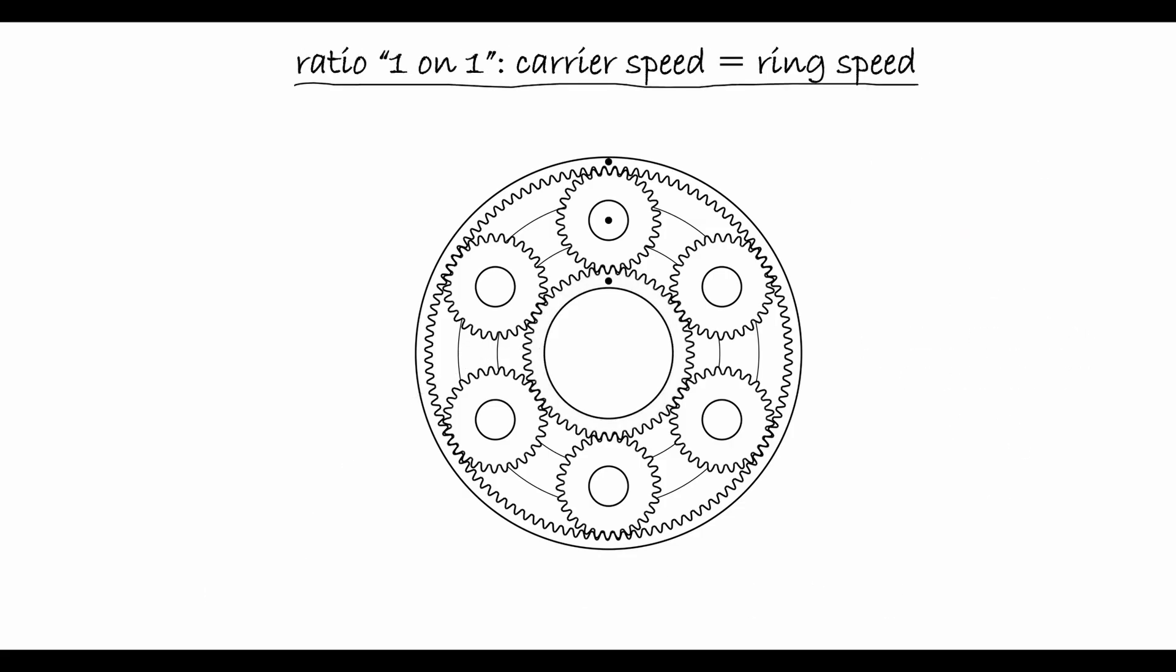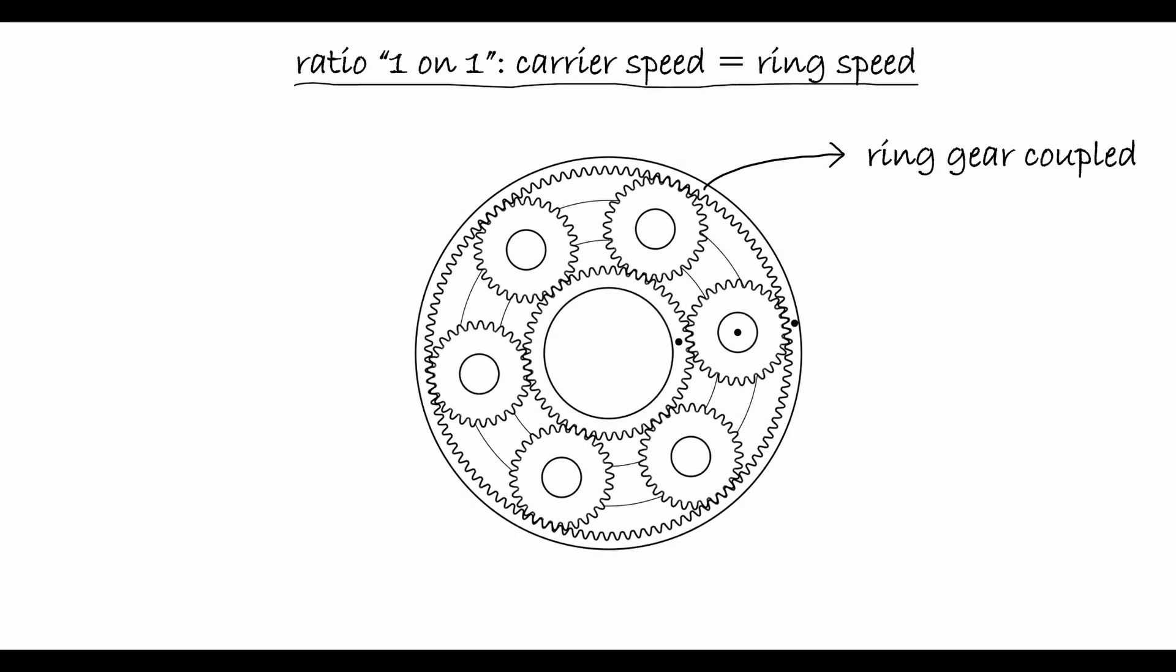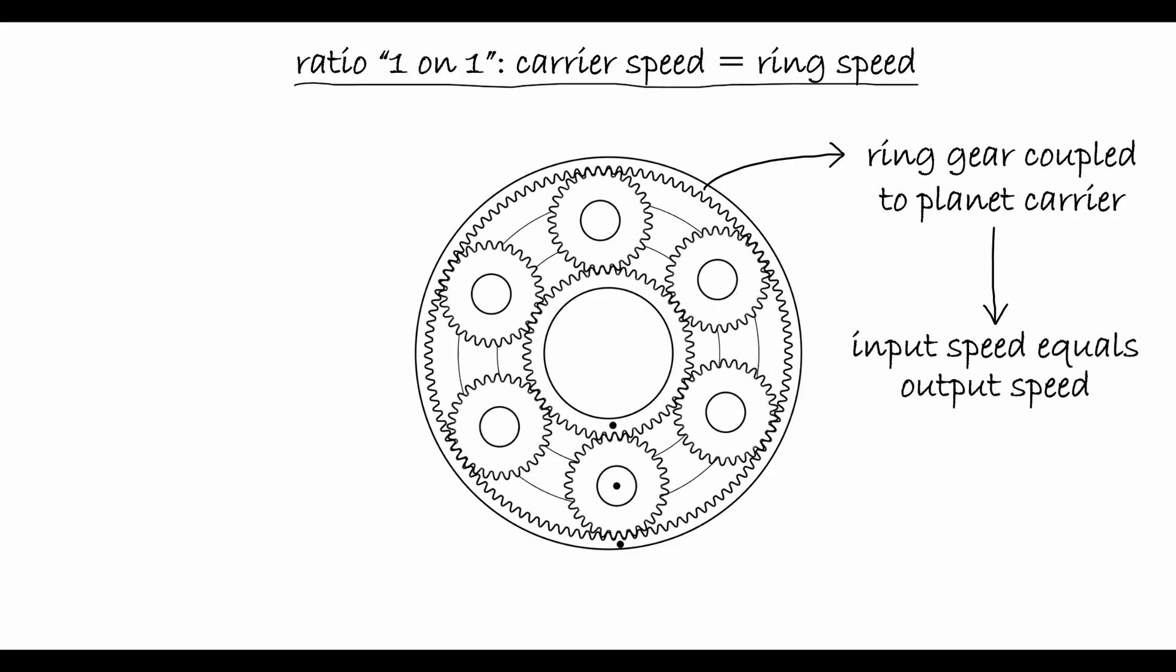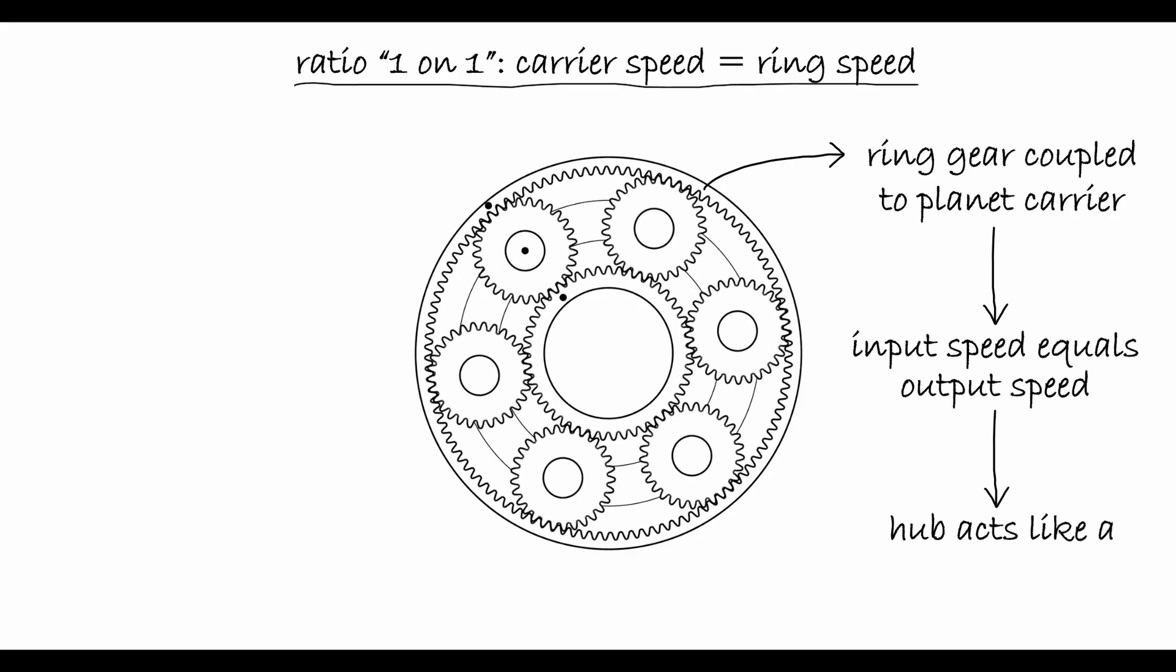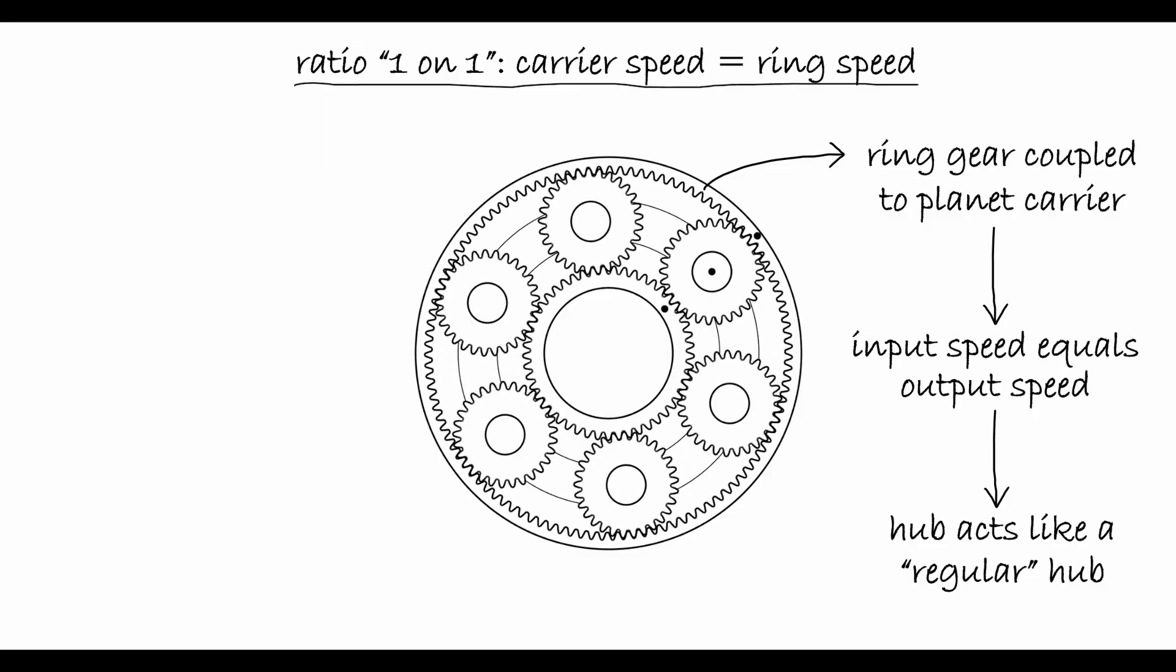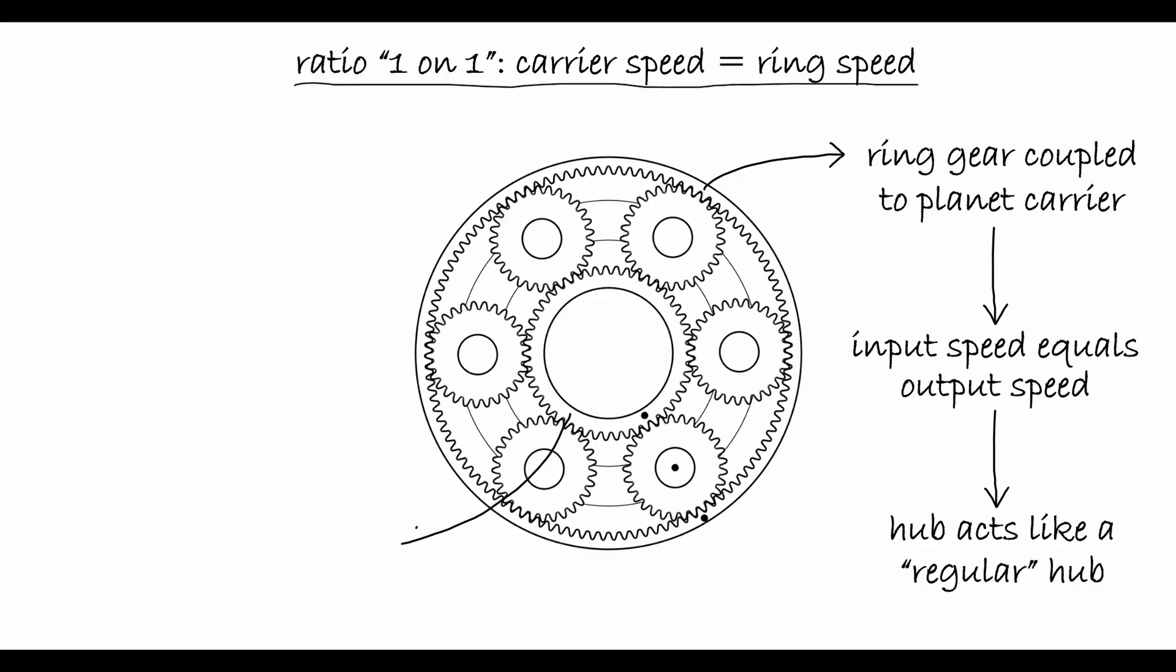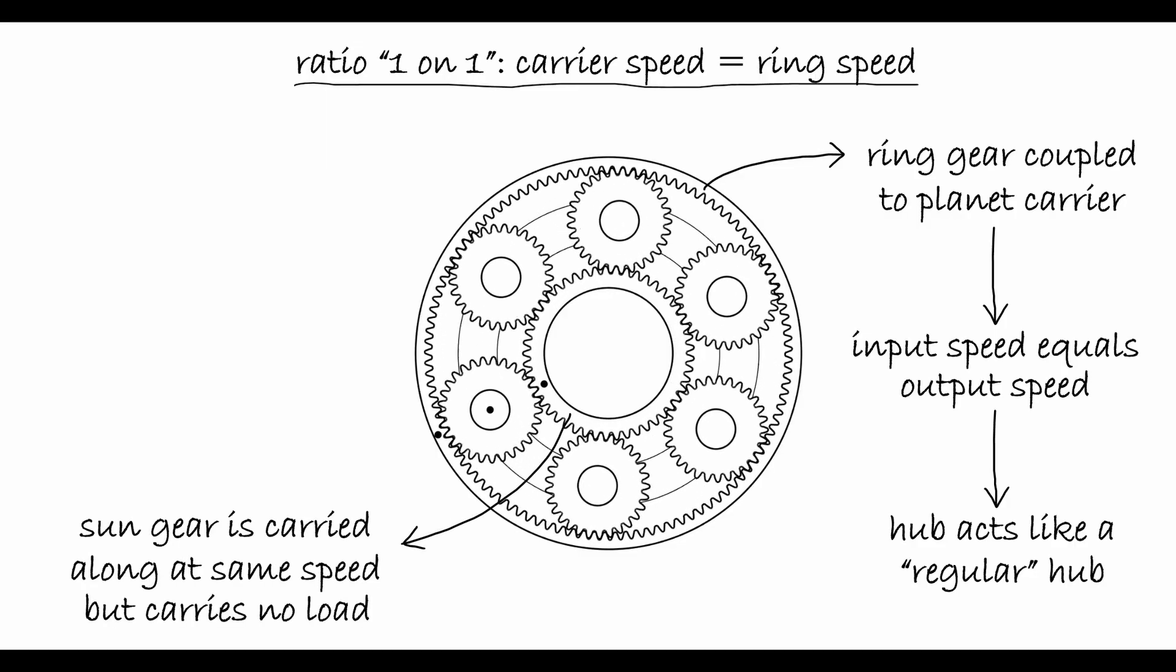A clutch mechanism is used to connect the ring gear to the planet carrier, in which case the input and output speed of the hub are the same. The PowerShift Hub then simply acts like a regular bicycle hub. The sun gear in this case is carried along with the planet carrier, but carries no load.